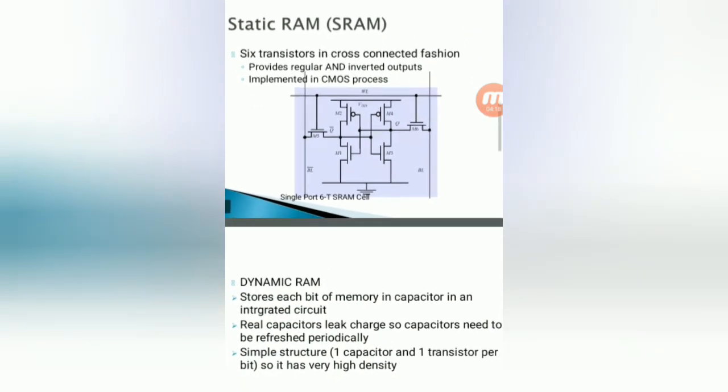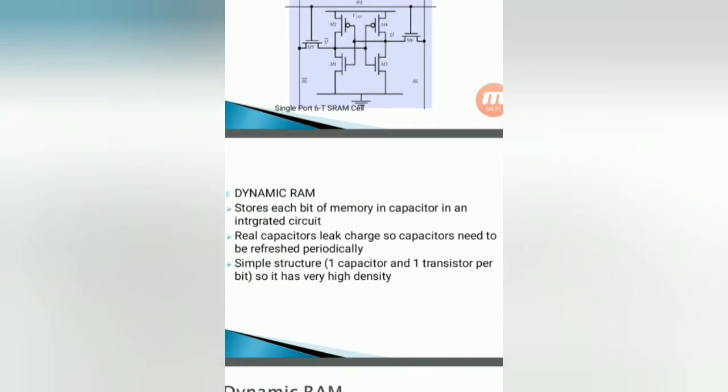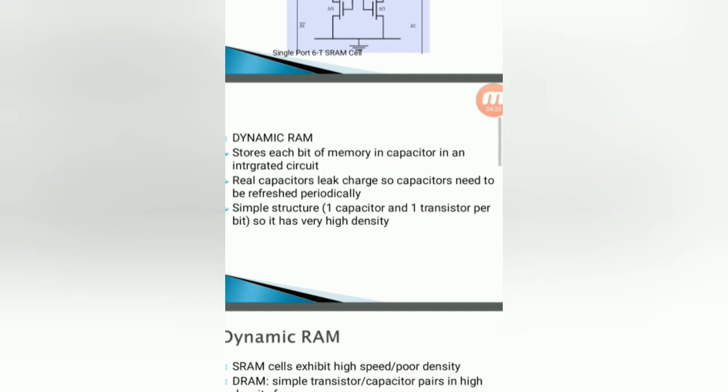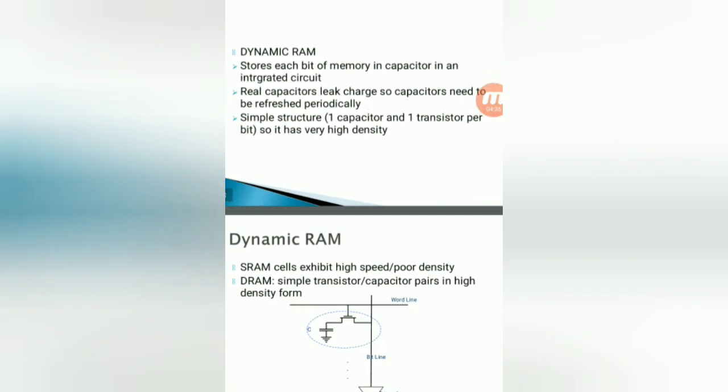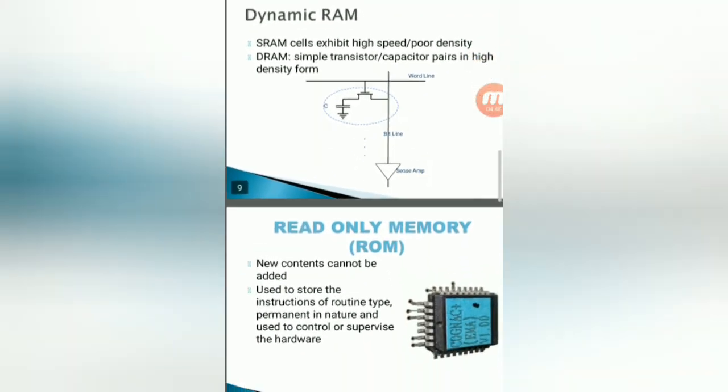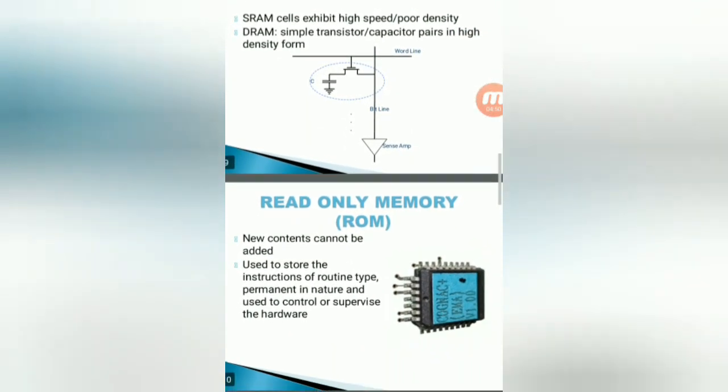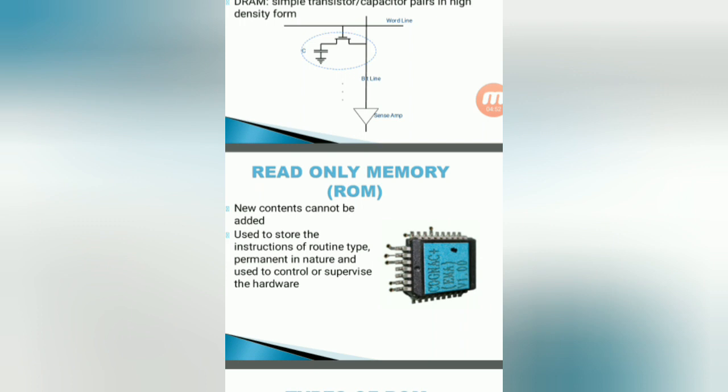Next we go for dynamic RAM. Dynamic RAM stores each bit of memory in a capacitor in the integrated circuit. The capacitors will be leaky charge, so capacitors need to be refreshed periodically. The structure of dynamic RAM is shown in the figure. It will be using the transistor along with the capacitor. Based on the input voltage, high or one means charging, zero means discharging. Like that we can go for charging state and discharging state.